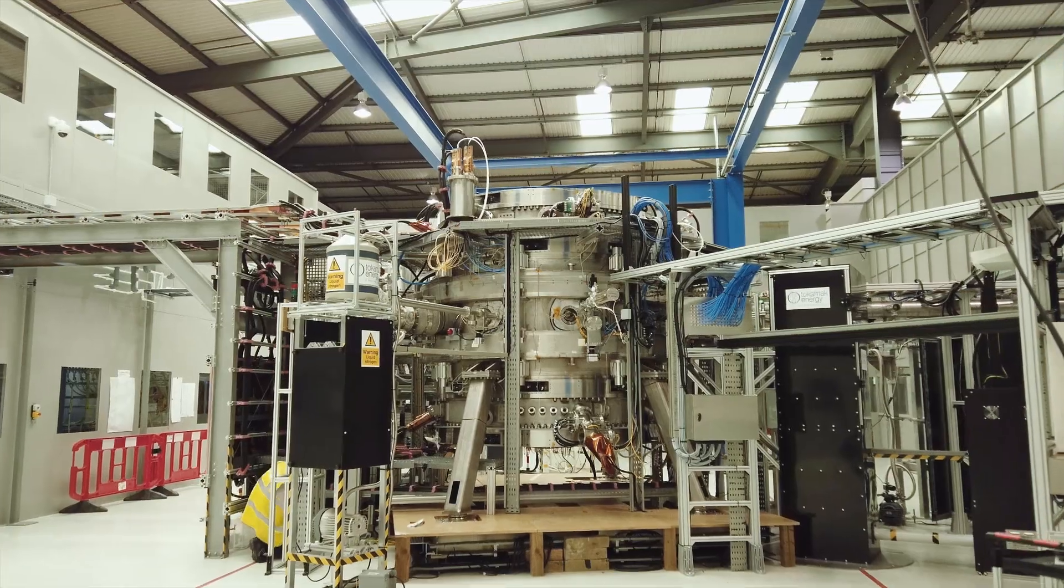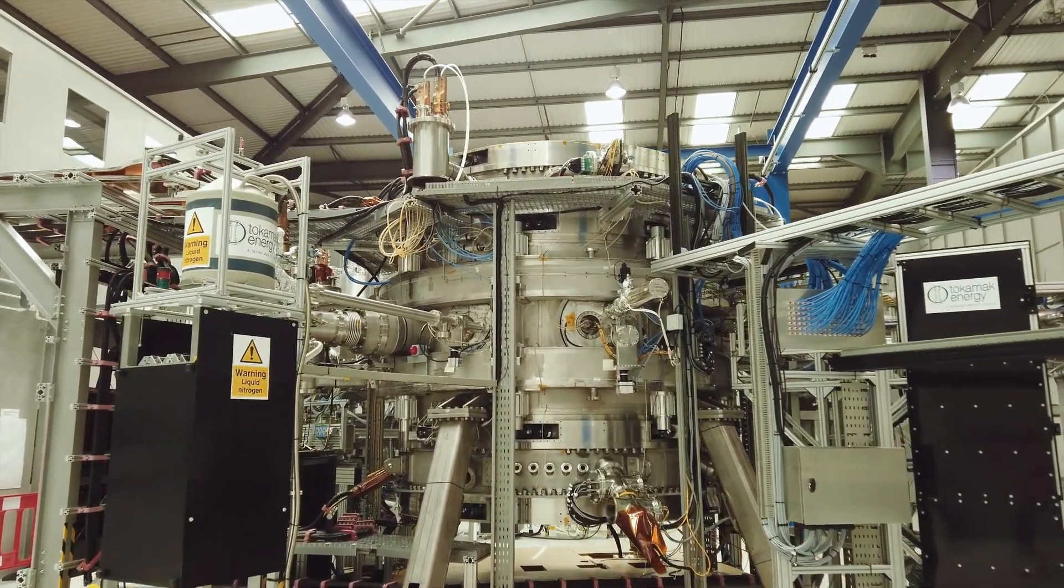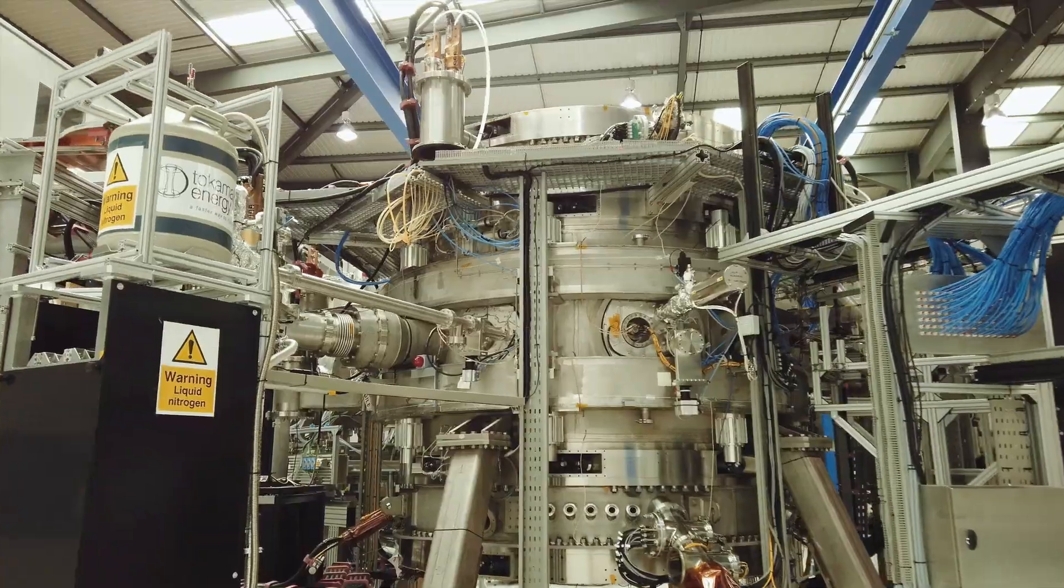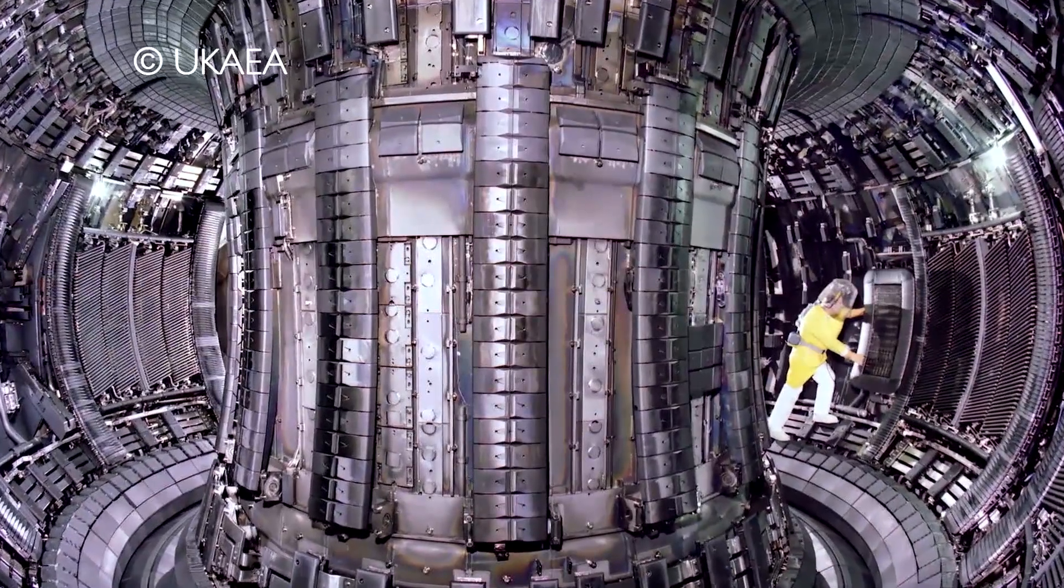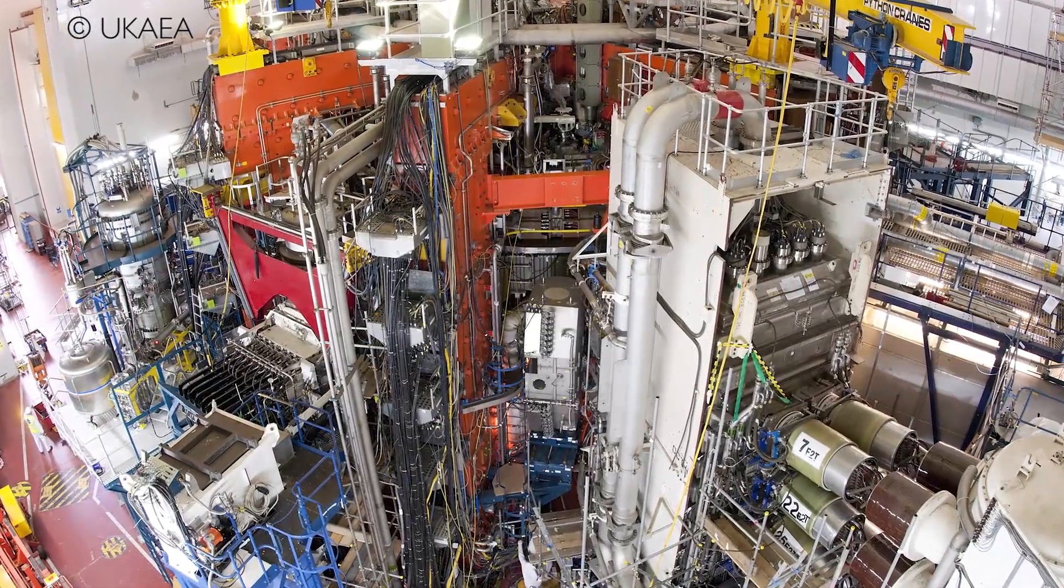A machine called a tokamak, a Russian design, is the best way we have found so far. The best performing tokamak in the world is JET, which holds the world record for fusion power produced. The word tokamak stands for toroidal chamber magnetic coils - it's a ring, donut-shaped vessel with magnetic coils around it that make a trap for the fusion fuel inside.